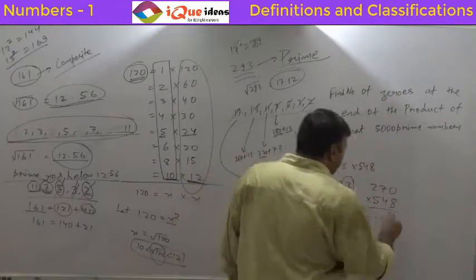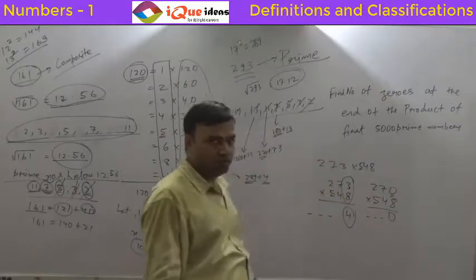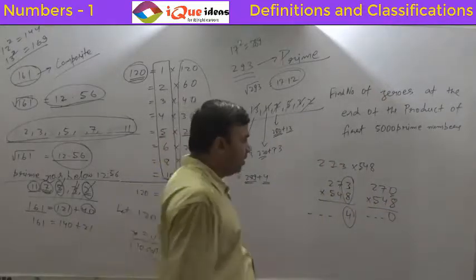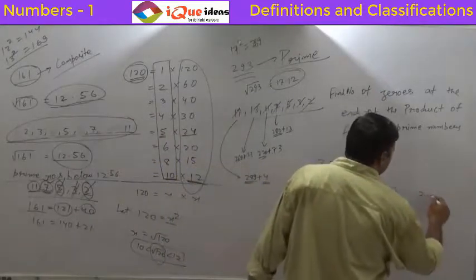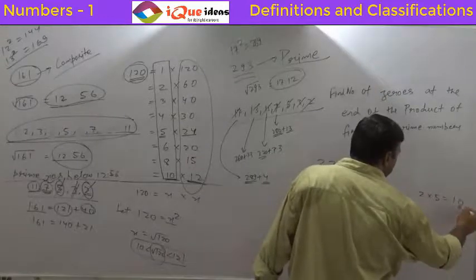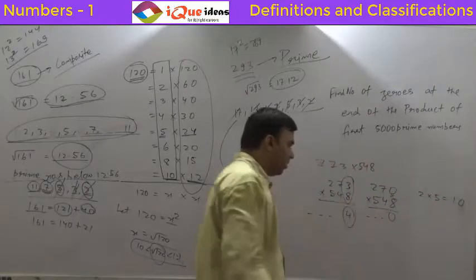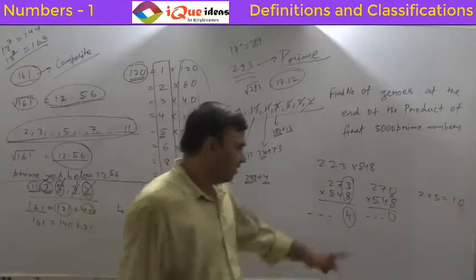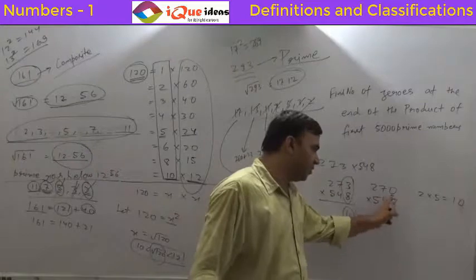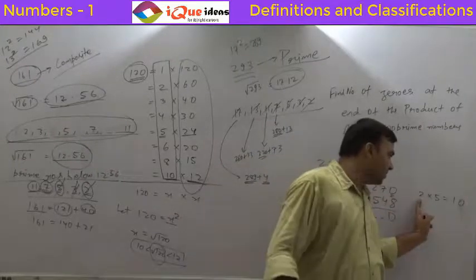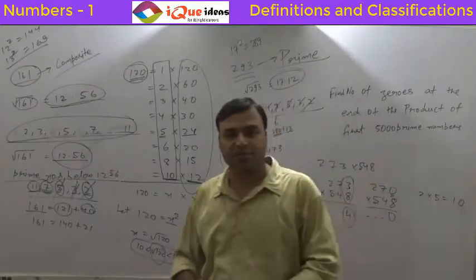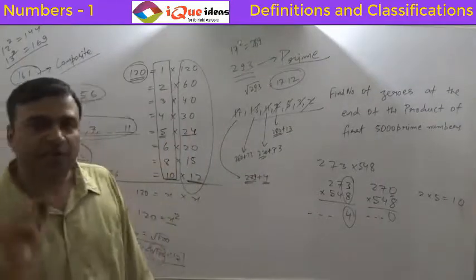But the prime numbers never have a 0 in the end. So that possibility is gone. What is the other possibility? See, 2 into 5, how much is it? 10. So in the product, 0 will come in the last place, 0 will come in the end. This is the only other way of finding a 0. This is one way - one of them is 0 or both are zeros. And the other way is one digit has 2 and the other digit is 5. So 2 into 5 is 10. So in the product, in the end, we will have a 0.